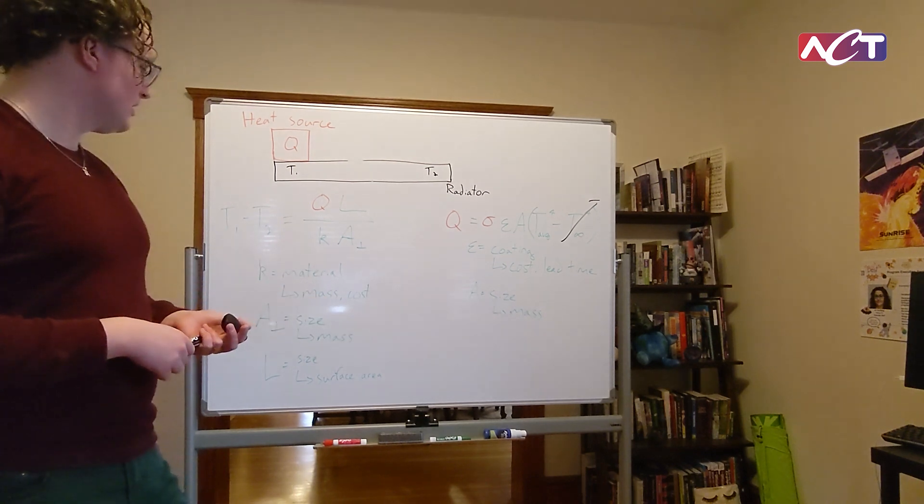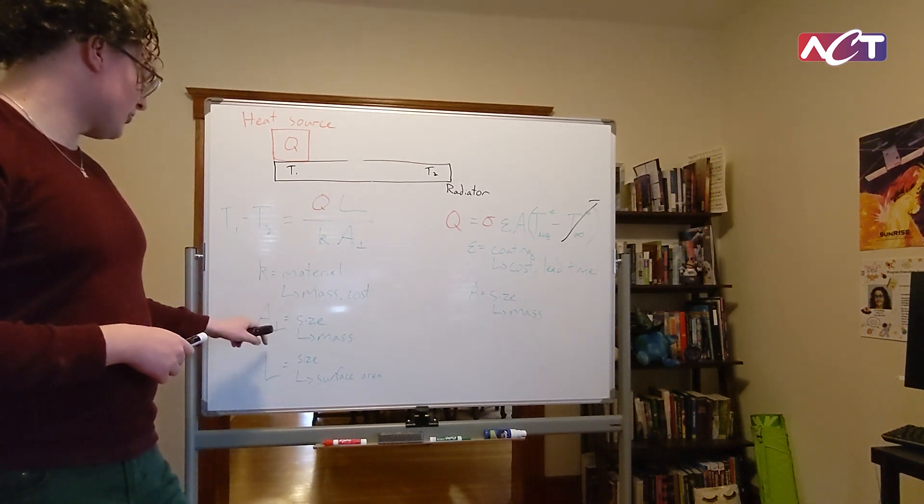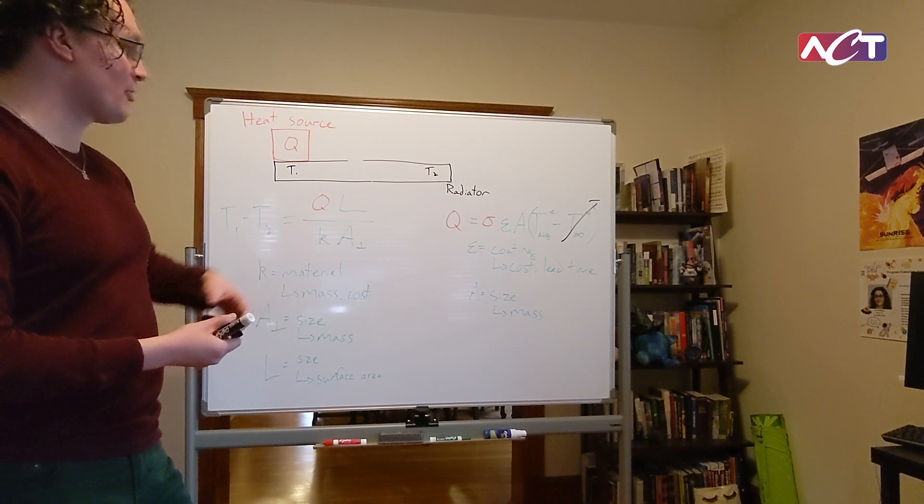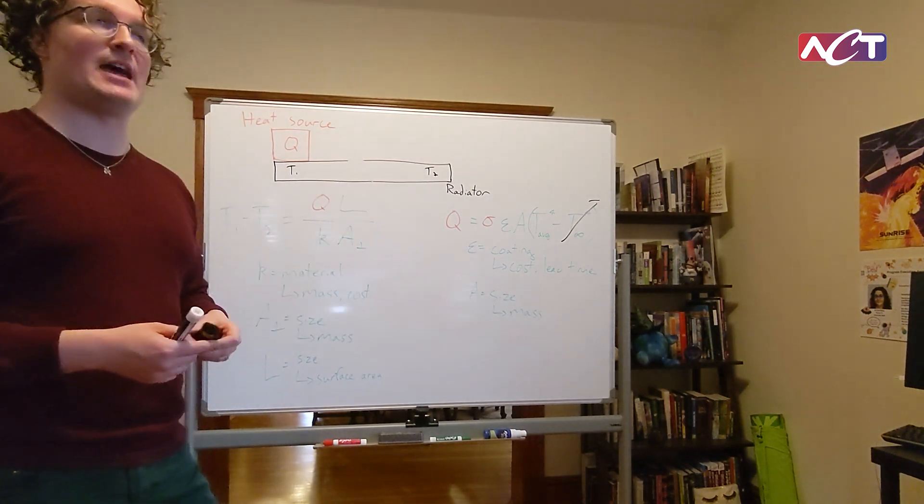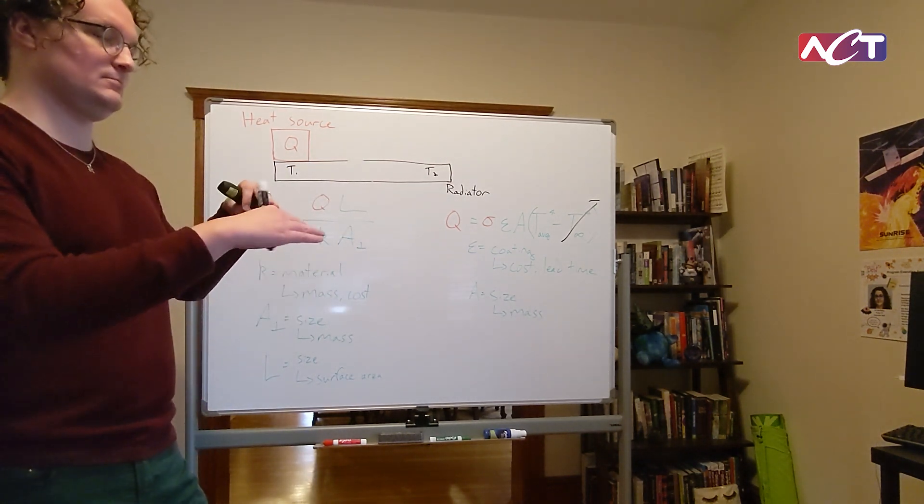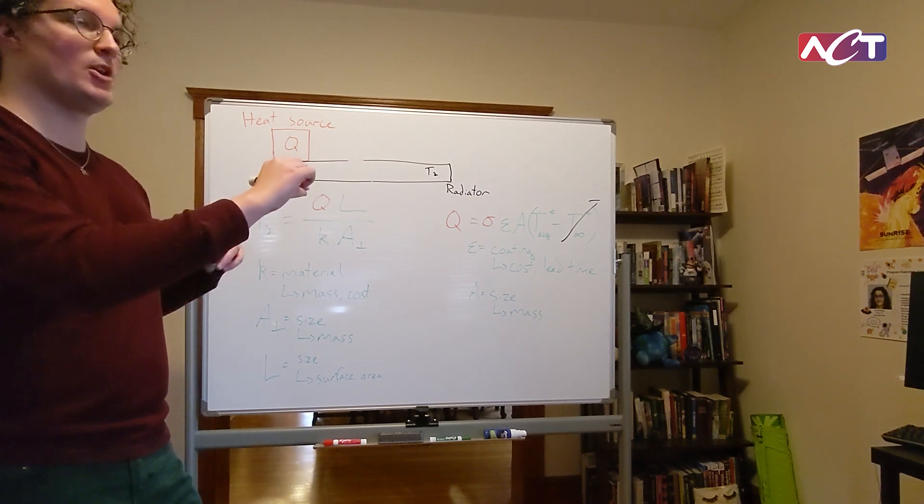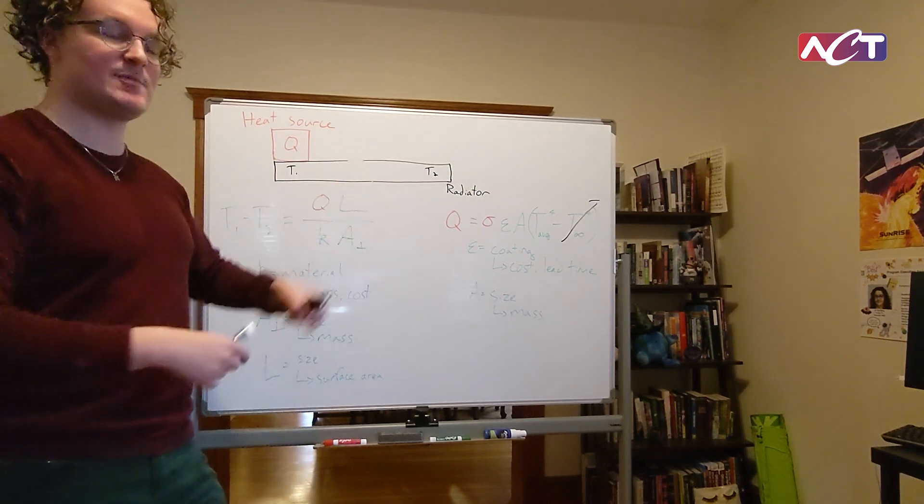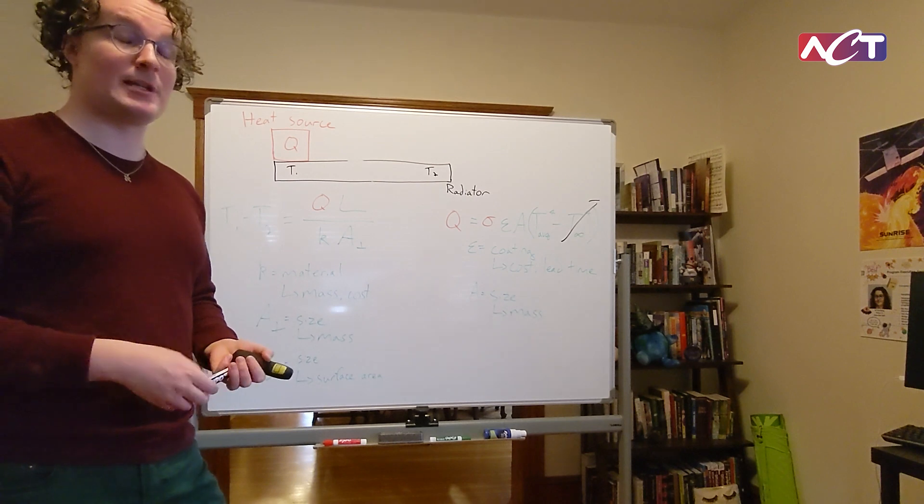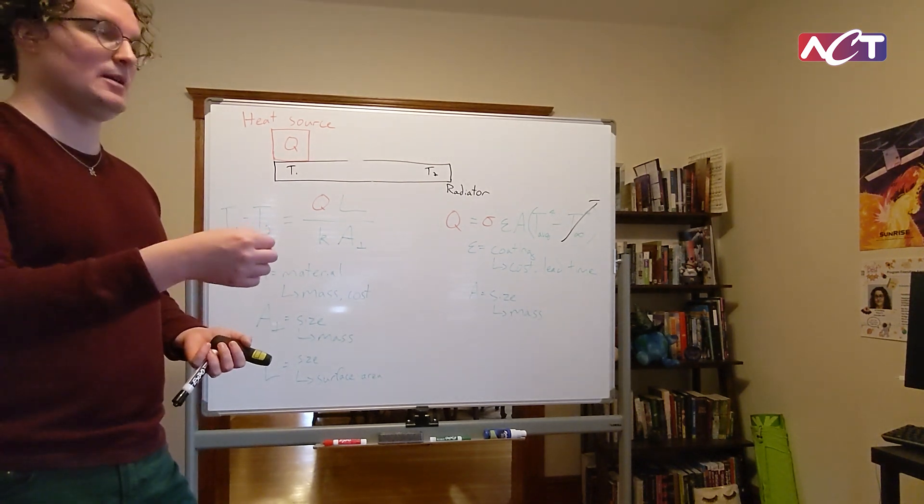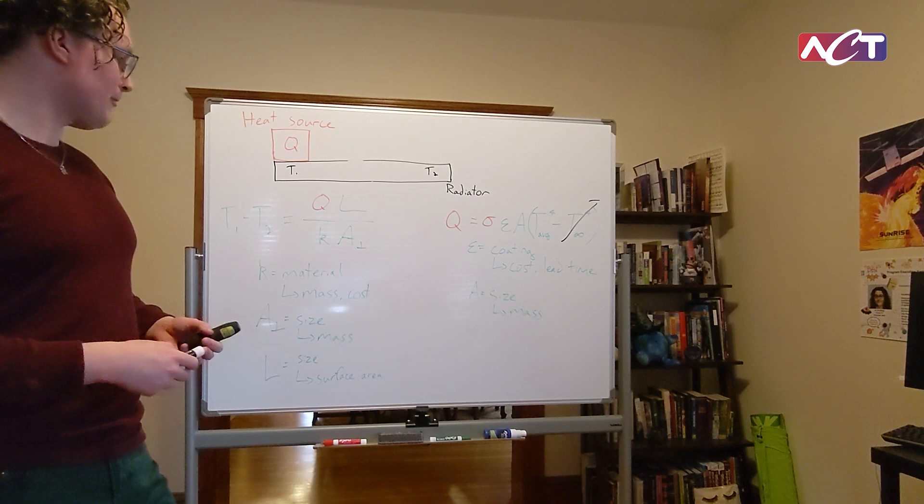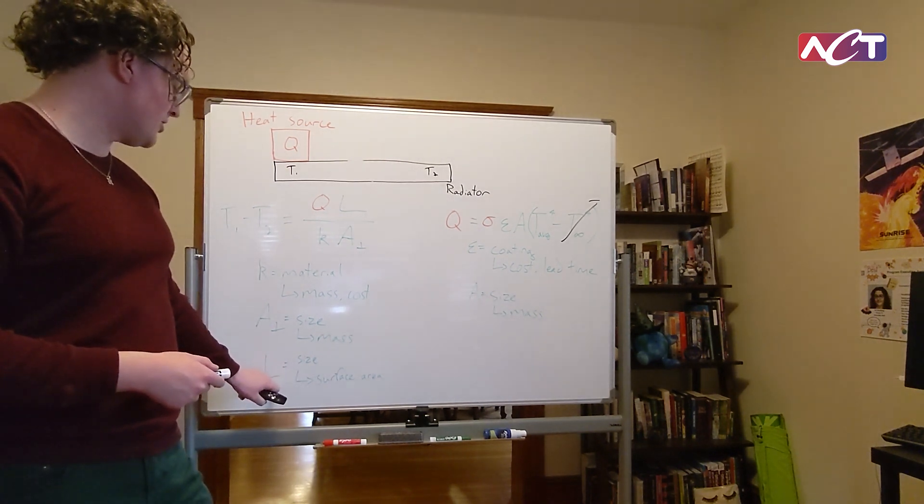The next one we can do is the cross-sectional area, and that's proportional to the thickness of the plate. We can have a thicker plate that has a much smaller temperature gradient between the hot and cold spot, but then again that straightforwardly increases your mass in proportion to the thickness of the radiator.